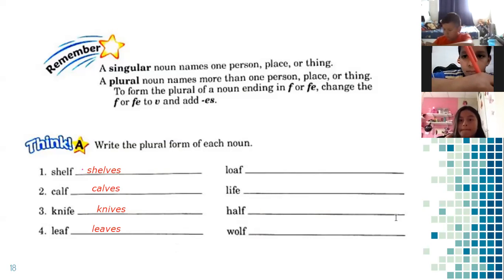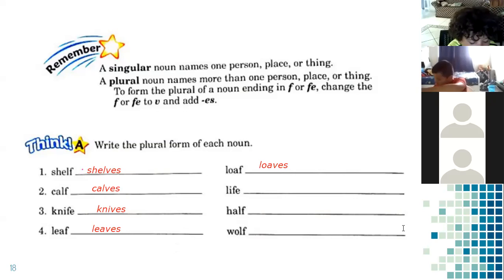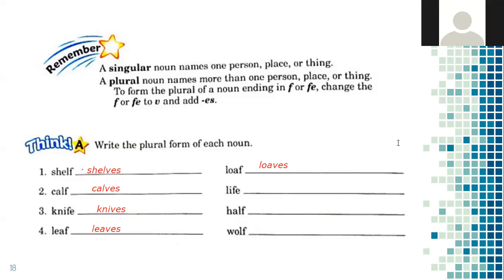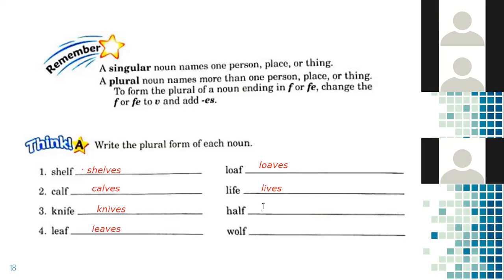Ana Camila — loaf. The plural form is loaves. Daniela Navas — life. The plural form is lives. Valery Lissama — half. What is the plural form of half? Halves. Excellent, thank you very much. Rudy — wolf. What is the plural form of wolf? You can write the answer in the chat. Matias Aguilar, help me — what is the plural form of wolf? Remember, you change the F to V. So wolves.